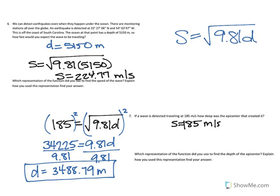So if we have a speed of 185 meters per second, we should have a depth of 3,488.79 meters. Now to think about this problem, go back and look at your previous answer where you had a depth of 5000 plus meters and your speed was 224. So it makes sense that this speed would be a little bit less because the depth was a little bit less.